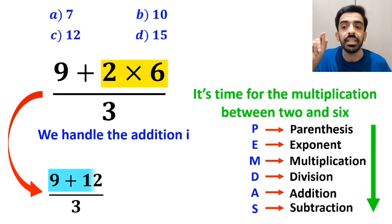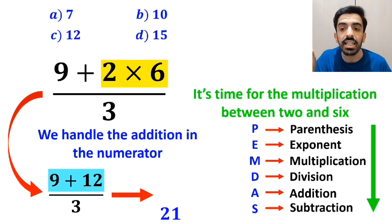Finally, we handle the addition in the numerator and simplify this expression to 21 over 3, which ultimately gives us the answer 7.